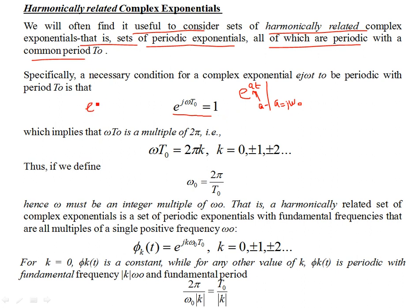Where this comes from: if you try to apply the time shift transformation by a certain period T, and if you consider T to be the smallest real positive quantity such that you can recover e^(jω0T) back, then this complex exponential is periodic. The necessary condition is that e^(jω0T) should equal 1. This is the necessary condition for a complex exponential of the form e^(jωT) to be periodic with period T0.